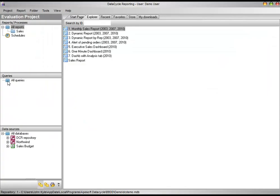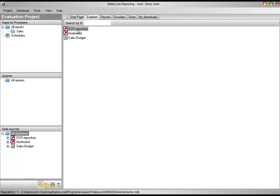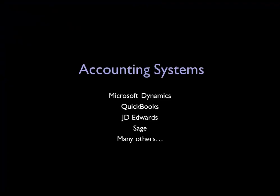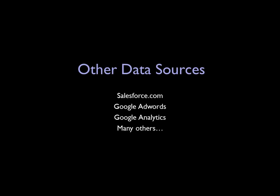In the same way that you can have multiple report templates associated with a project, you can also have multiple queries and multiple data sources. For example, you can easily retrieve data from accounting systems like Microsoft Dynamics, JD Edwards, QuickBooks, and many others. You can also retrieve data from virtually any database, Excel files, CSV files, and many online sources like Google AdWords and Salesforce.com.